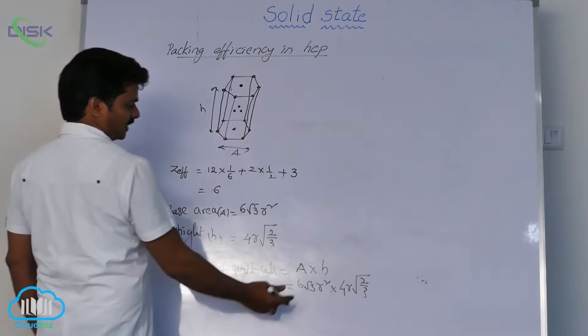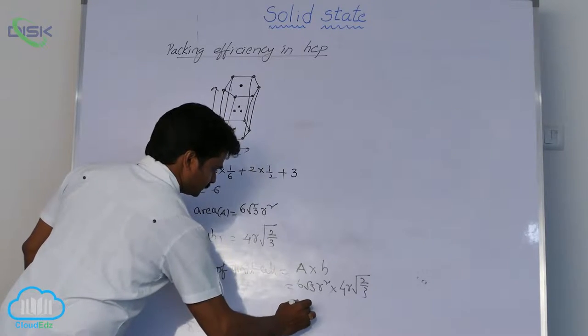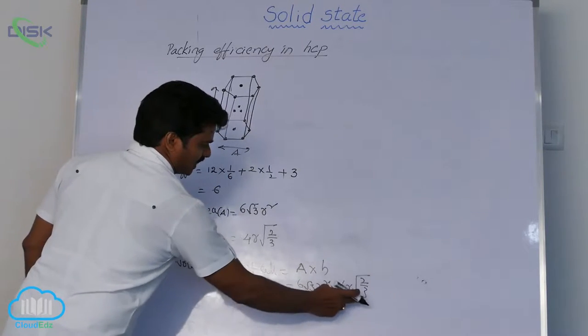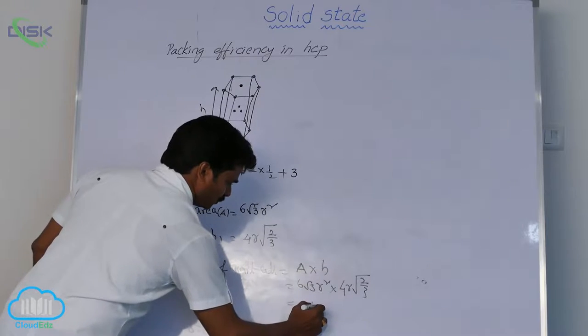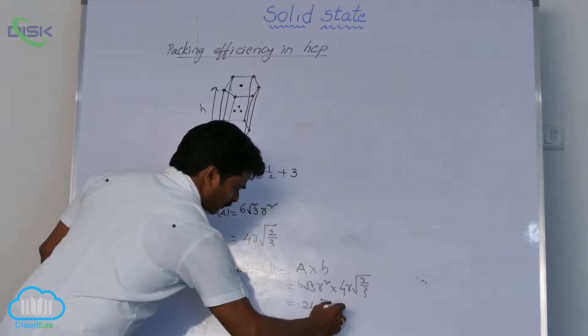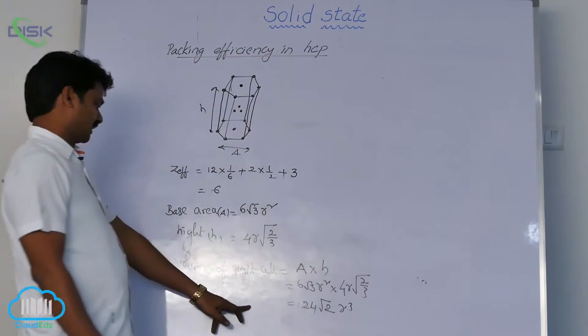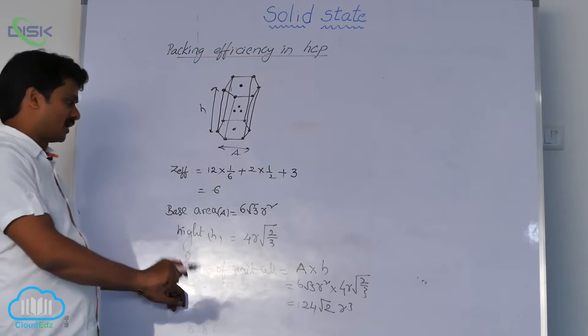So now here 6 into 4, 24 and root 3, root 3 cancel, there is root 2, so 24 root 2 R cube. This is the volume of hexagonal unit cell.